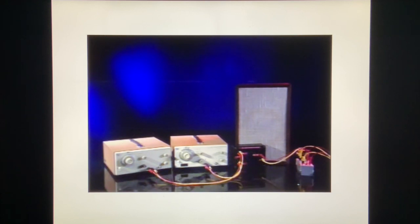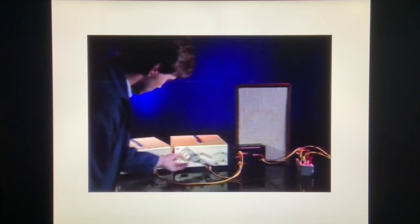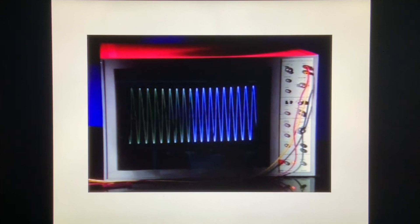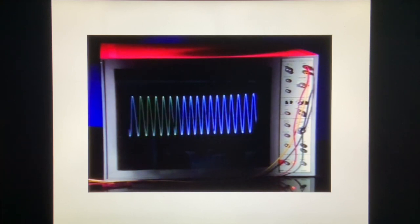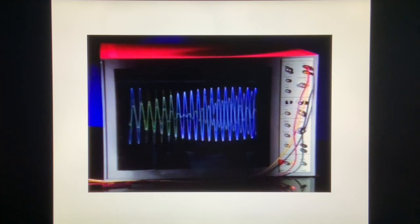We'll demonstrate beats and sound waves using these two audio oscillators. The signals from the oscillators will be added together and amplified and then fed into this speaker and oscilloscope. The oscillators start with equal frequencies. Now we'll decrease the frequency of one oscillator. Now we'll further decrease the frequency of the oscillator.